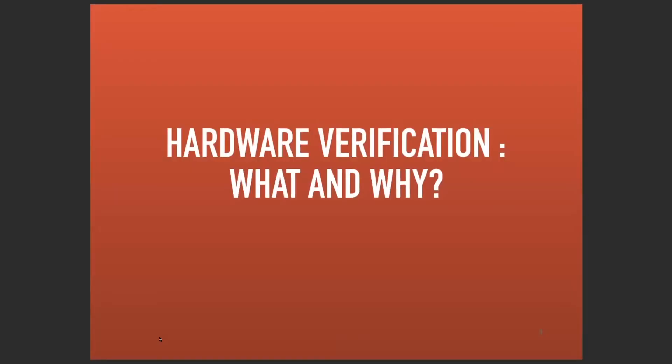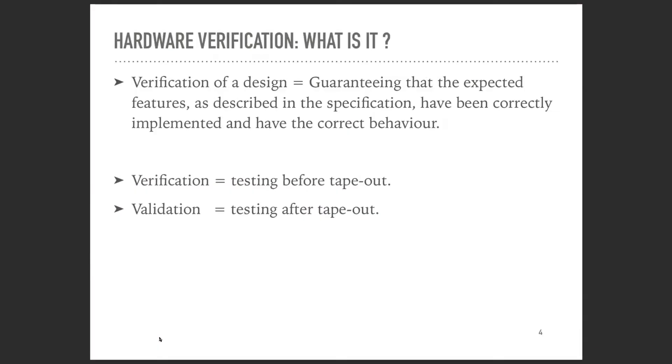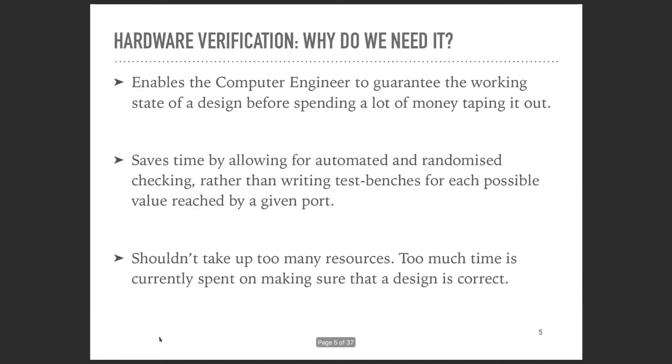Let's begin by talking about hardware verification. Verifying the design means guaranteeing that the expected features as described in the specification have been correctly implemented and have the correct behavior. This can be separated into two main methods: verification, which is testing before taping out, and validation, which is testing after taping out. We're going to focus on verification. The idea is to guarantee that our design works before spending a lot of money taping out, so it's very important to have efficient tools that minimize the amount of time we spend on the verification cycle.